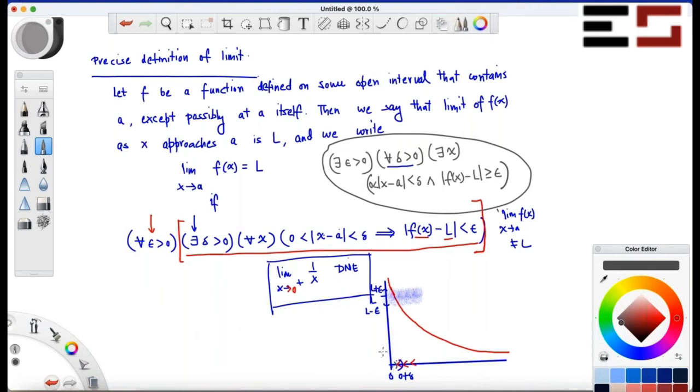And therefore L is not the limit, because there is an epsilon for which no delta works. So what that means is no matter what delta you want to consider, you'll always be able to find a point which is within a delta distance away from a.